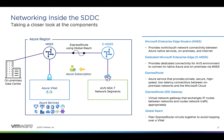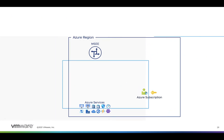An ExpressRoute gateway can be configured in an existing customer VNet to allow private customer Azure resources to communicate with AVS resources. A common pattern is to create a VNet with a jumpbox VM and an ExpressRoute gateway connected to the AVS ExpressRoute, and use Azure Bastion to connect to the jumpbox. Most enterprise customers will have an existing ExpressRoute circuit between an on-prem data center and an Azure region. Using ExpressRoute Global Reach, the customer can peer that ExpressRoute circuit with the private ExpressRoute circuit supporting AVS to allow for connectivity between on-prem resources, connected VNets, and AVS.